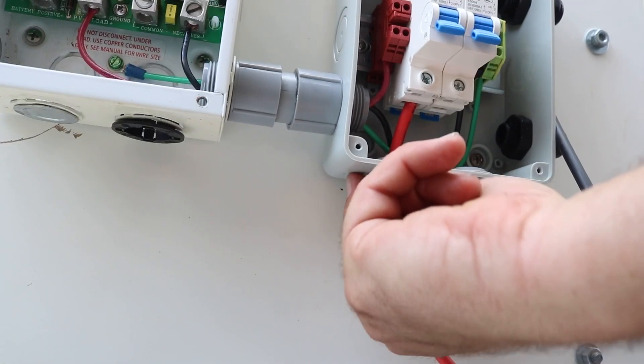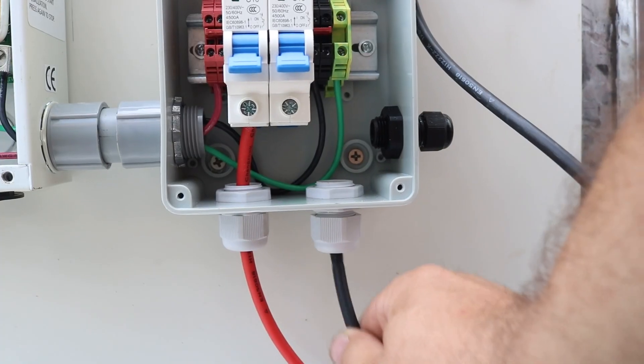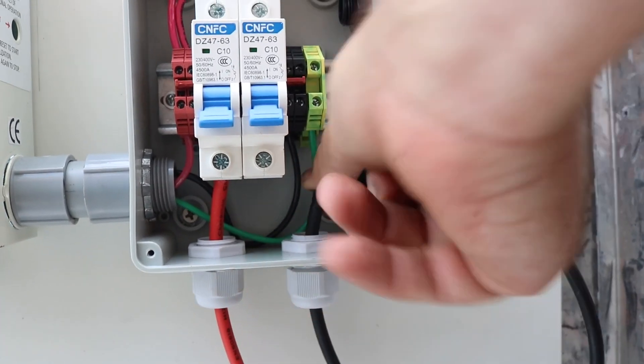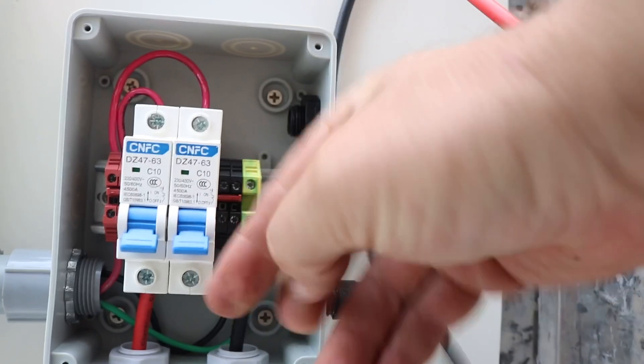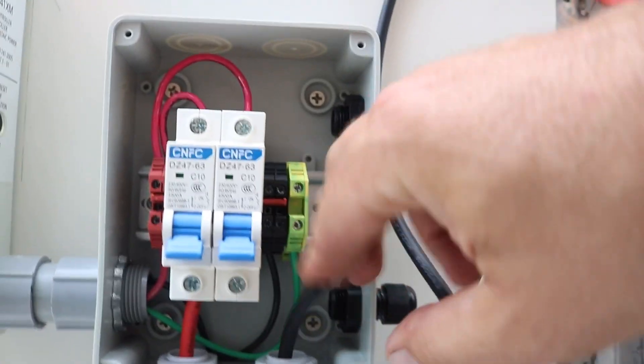Our black negative wire gets the exact same treatment, coming up through the cable gland and strain relief, except instead of going to a breaker it's going to the negative terminal block.